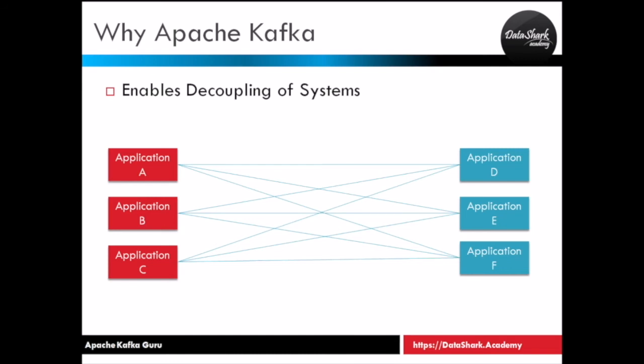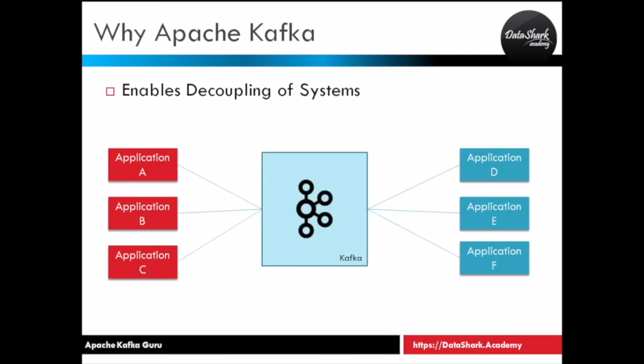We don't want that kind of architecture. The alternative is to decouple these systems, meaning put something in the middle that will take care of all the communications so these applications are not directly talking to each other. This is the kind of architecture that Apache Kafka provides, where on the left hand side you have producers and on the right hand side you have consumers. Producers and consumers are not directly talking to each other — they both talk to Kafka, and Kafka manages the transmission of data and requests between both systems.